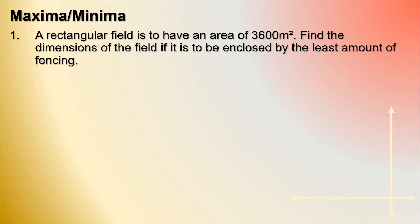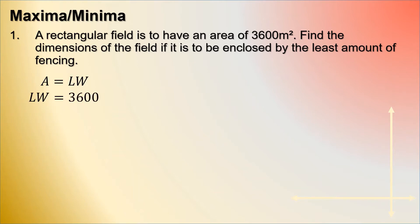For example, a rectangular field is to have an area of 3,600 meters squared. Find the dimensions of the field if it is to be enclosed by the least amount of fencing. We need to find the length and width of the rectangular field. Using the formula for the area of a rectangle, that is length times width, so length times width is equal to 3,600 meters squared.